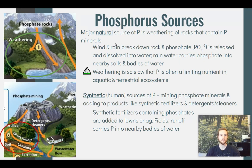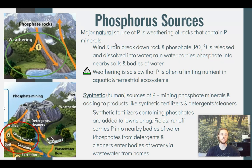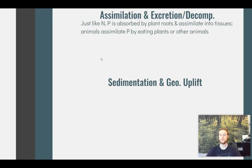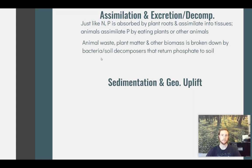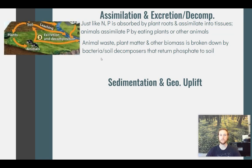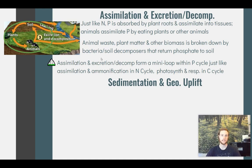This creates an issue because runoff from agricultural fields can carry phosphates from the soil into nearby bodies of water. The same can happen with detergents and cleaners, which leave homes via wastewater and eventually enter natural bodies of water. Just like nitrogen, phosphorus is absorbed from the soil by plant roots and assimilated into plant tissues. Animals must eat plants — or other animals that have eaten plants — to take in phosphorus. Animal waste and decomposition of dead organic matter by soil bacteria return phosphorus to the soil, forming a mini loop of assimilation, consumption, and decomposition.